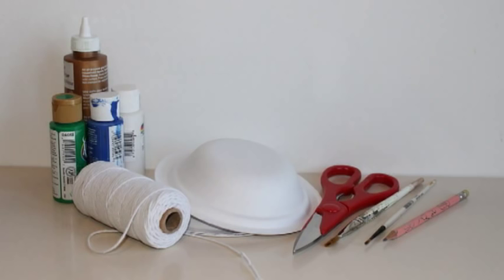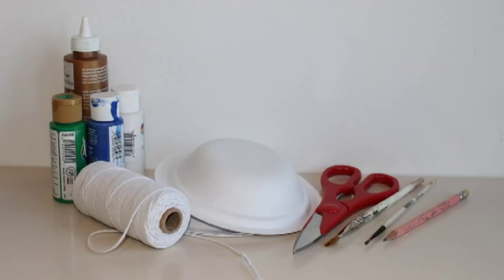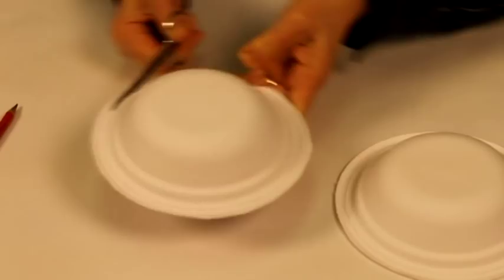To represent the Earth, you'll need two paper balls, blue, green and white paint, brushes, a pencil, varnish, white glue and a string.